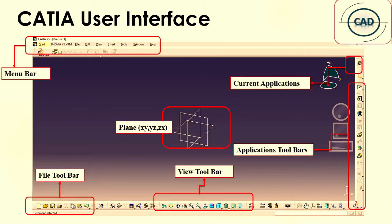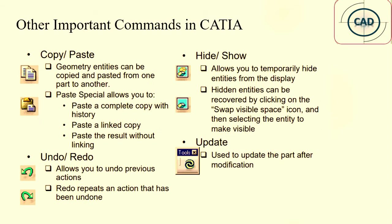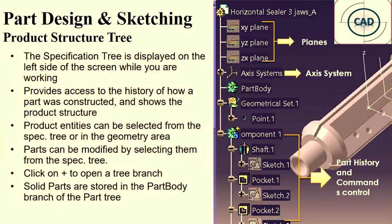We also covered the user interface in CATIA, manipulation in CATIA like pan, rotate, zoom in, zoom out, drag and use of the compass. Then other important commands like copy-paste, undo, hide and show, and update. We also discussed the importance of the product structure tree, planes, axis system, part history and common controls.